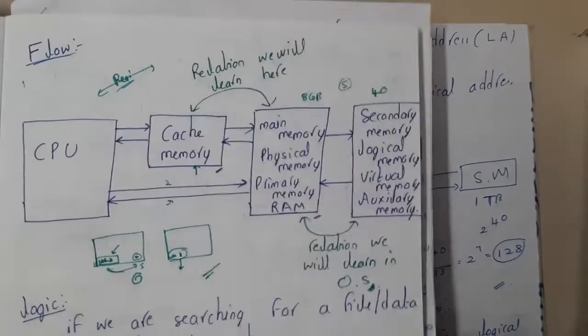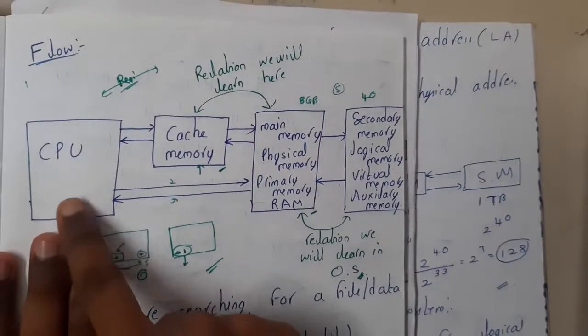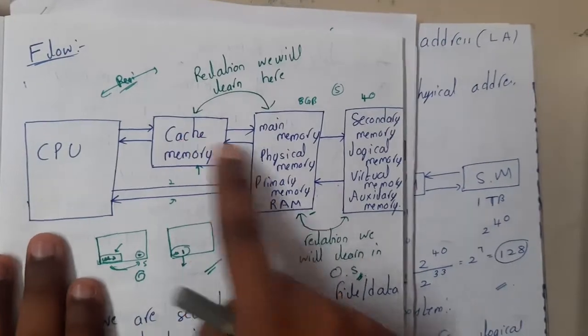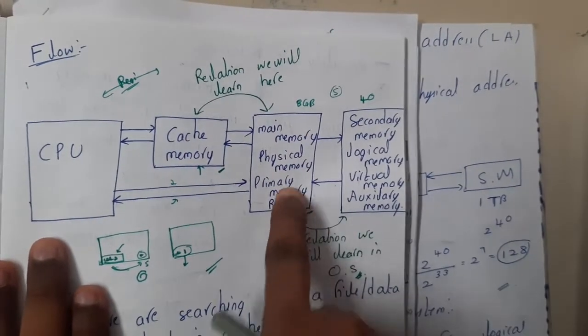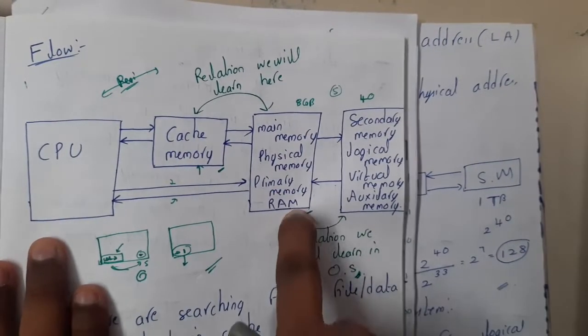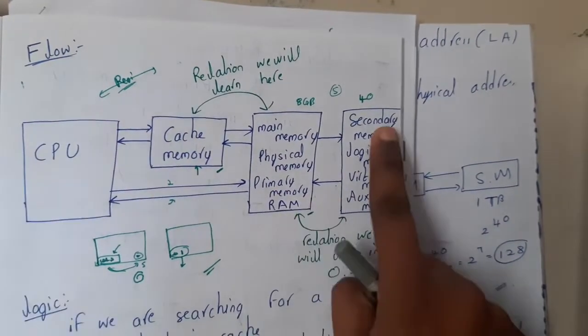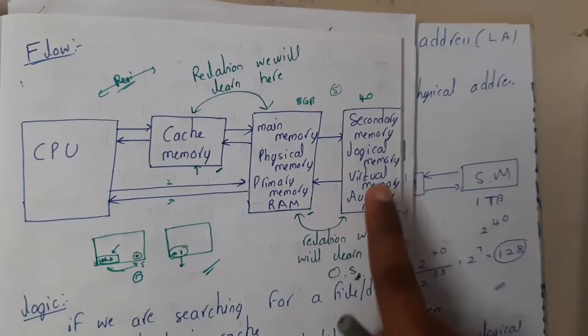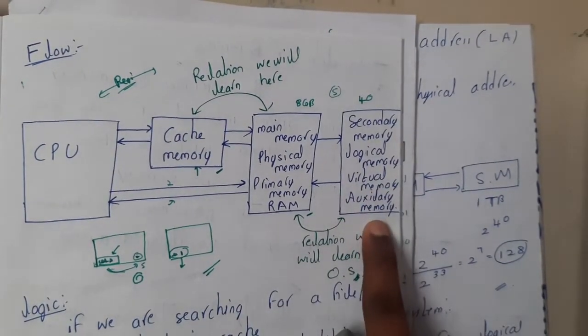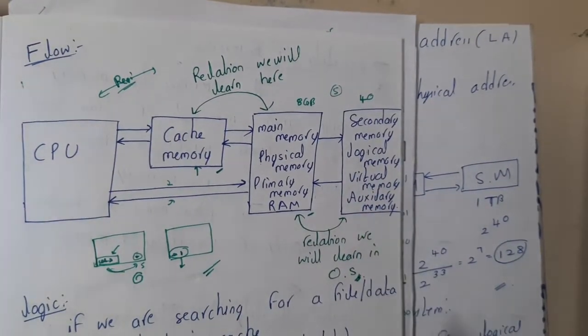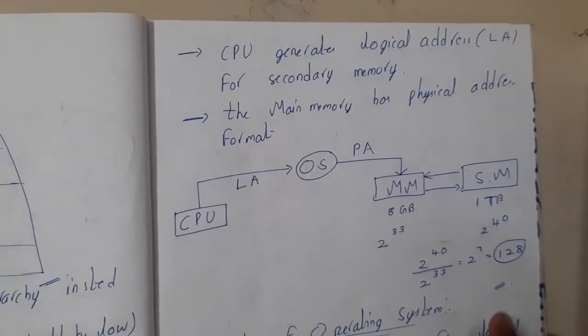For naming conventions: main memory is also called physical memory, primary memory, or RAM. Secondary memory is also called logical memory, virtual memory, or auxiliary memory.